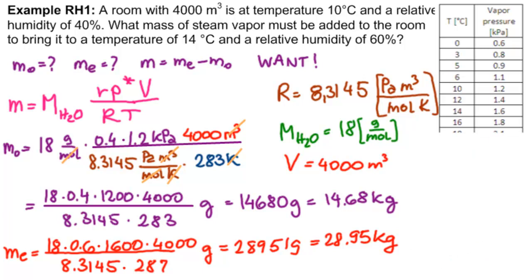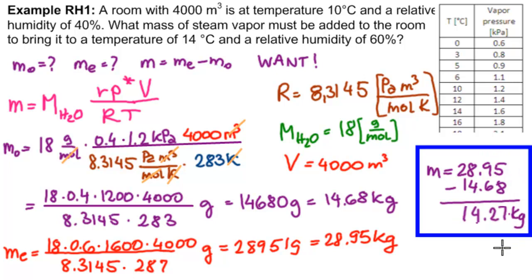So our answer is M equals 28.95 minus 14.68, which would be 14.27 kilograms. That's that. So quick, thanks for joining us.